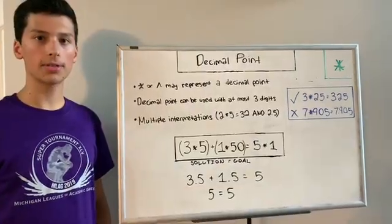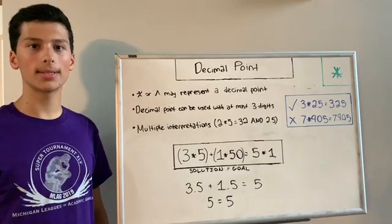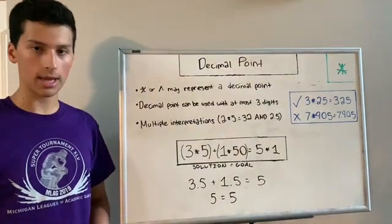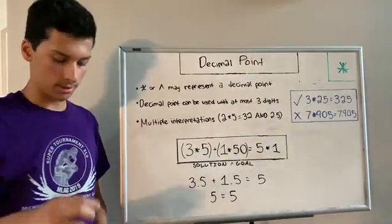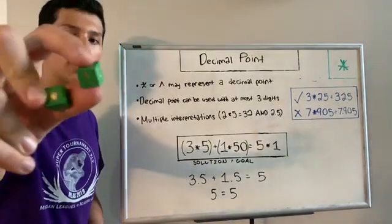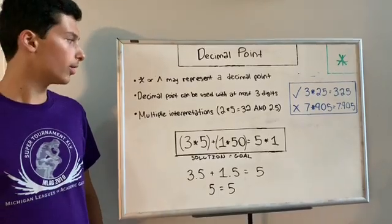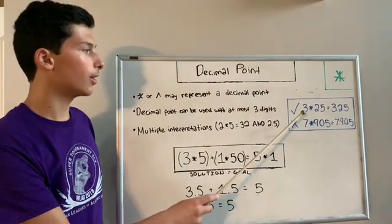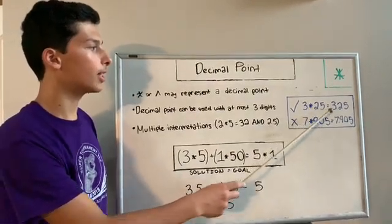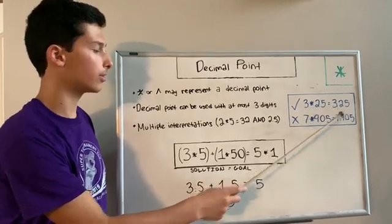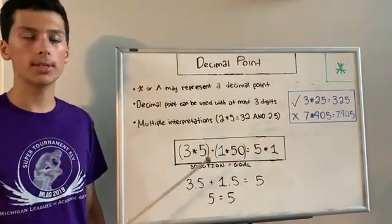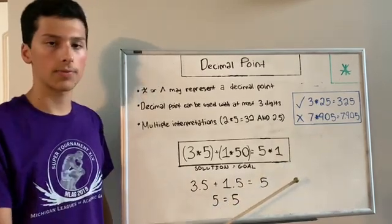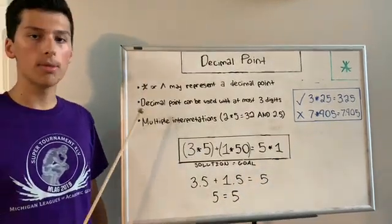The last variation is decimal point. Decimal point is represented by a power sign. Depending on the cube, your power sign will either look like a star or a carat. This one is a star here, and this one is the carat. So what you do with the power sign is it turns into the dot of a decimal point. So as you can see here, the 3.25, the dot, is represented by the power sign to make it 3.25. You can use at most three digits in your decimal, not more than three. So this one, 7.905, would not work because it has four digits.